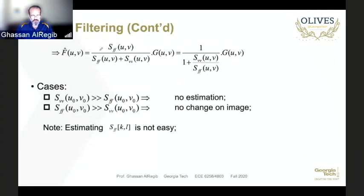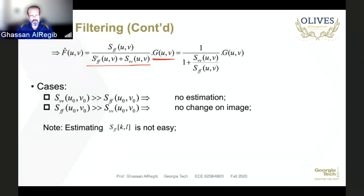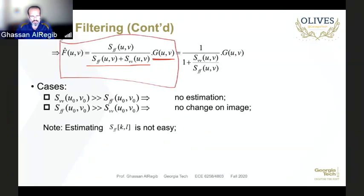If you have this in an exam, using the simplified expression will be much easier when you have additive noise, so take note of that. Once you have the filter W, you take the Fourier transform of g, multiply by your Wiener filter, and that gives you an estimate of f in the frequency domain. Then you do the inverse Fourier transform to get f-hat in the spatial domain.